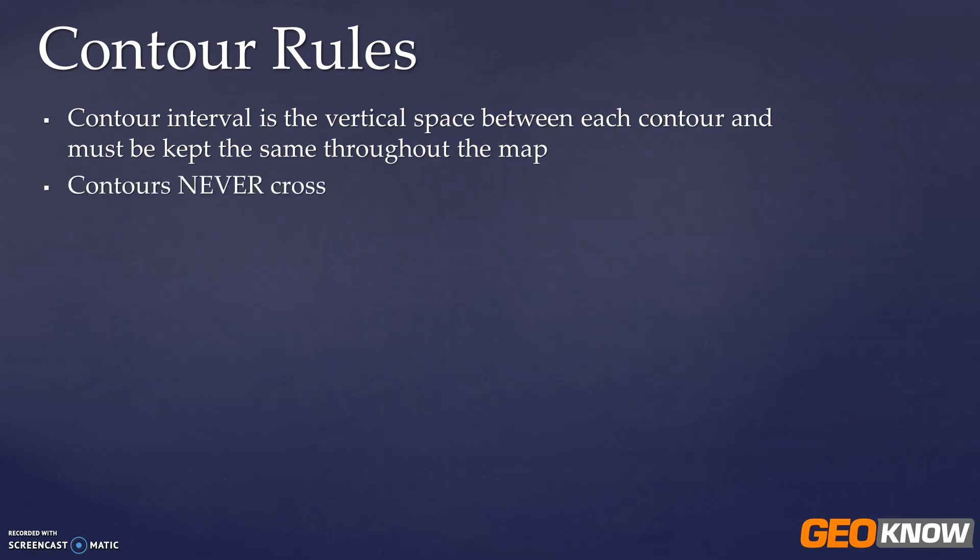Contours will never cross. You'll never see that happen because it doesn't make sense. You cannot have two different elevations on the same point in space.